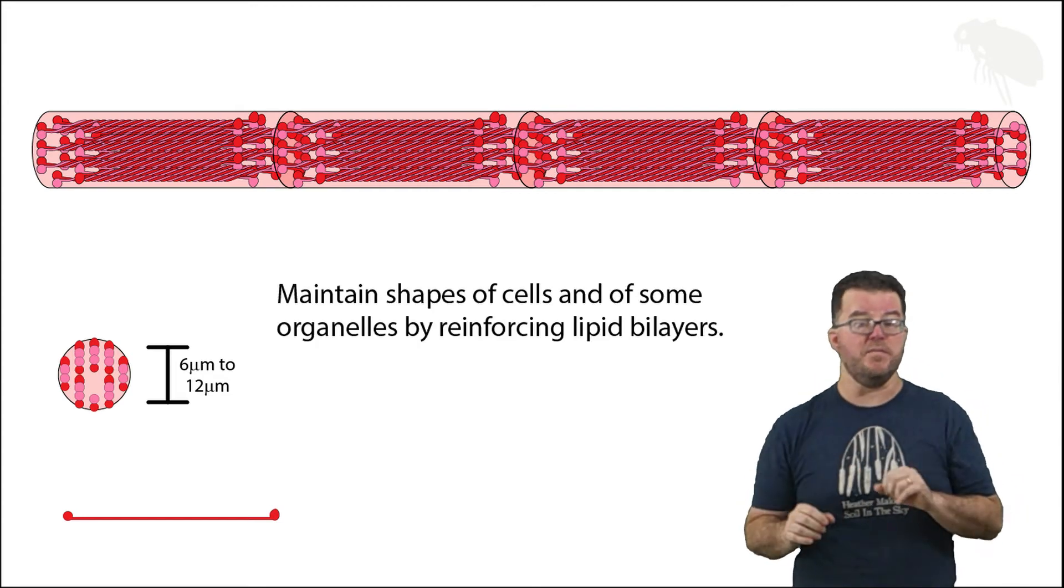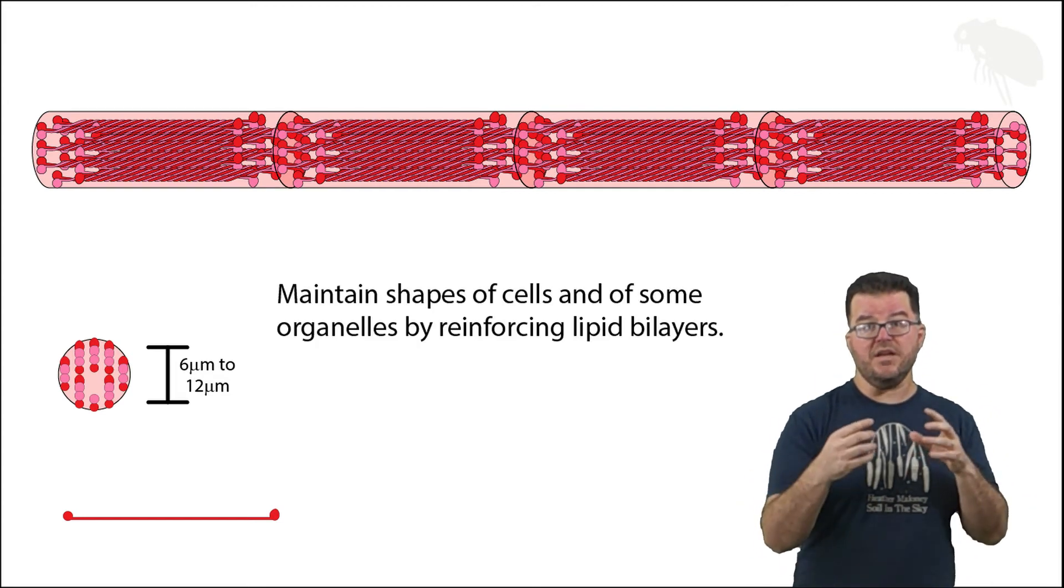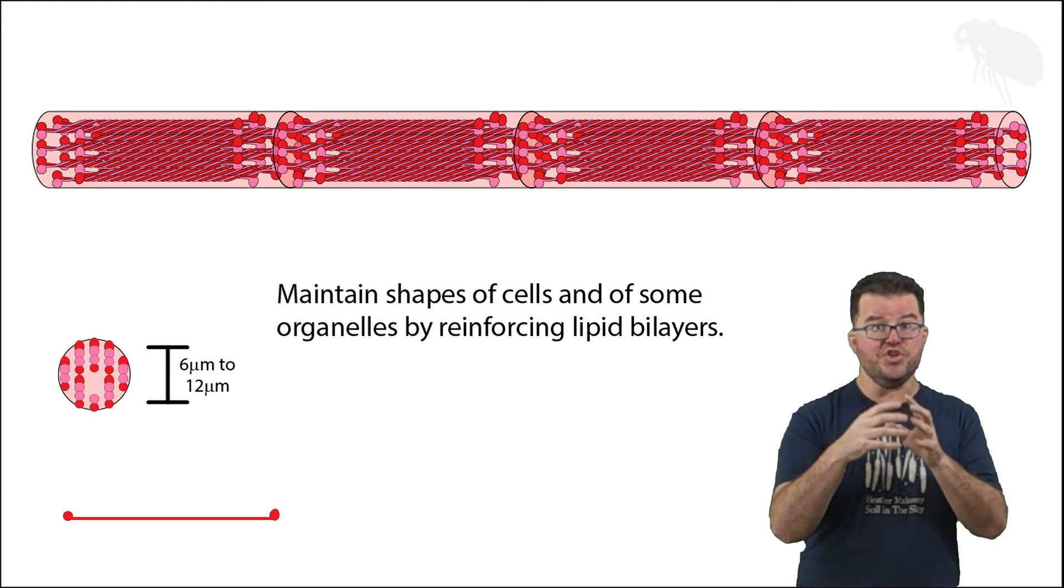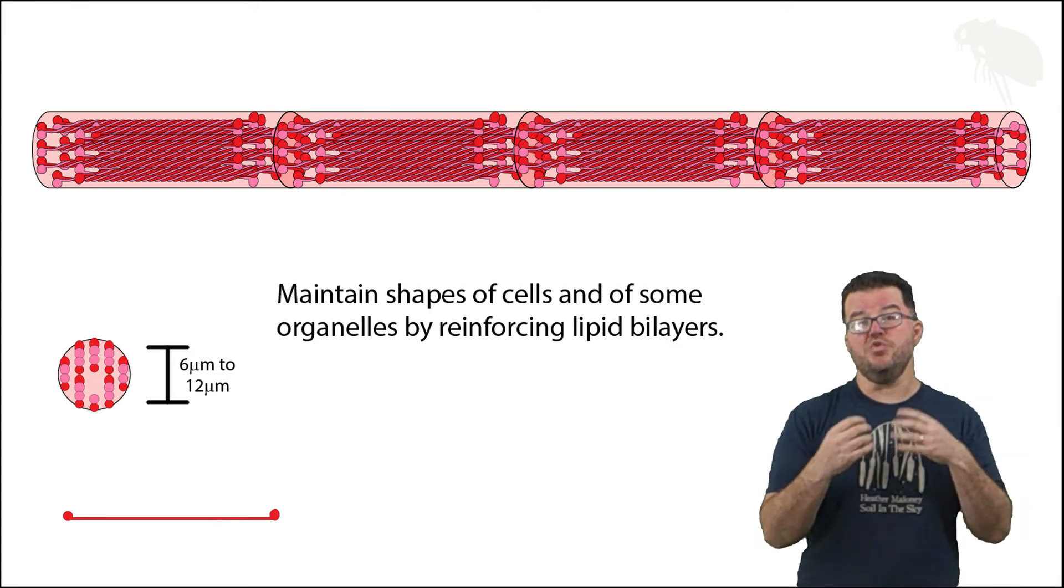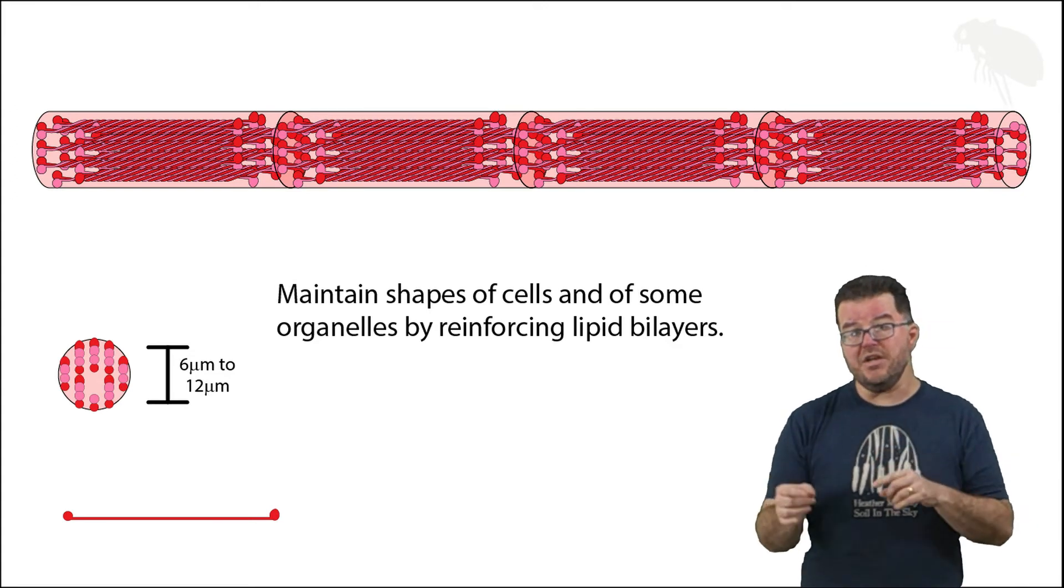So cells that have a particular shape where it's pretty rigid and they hold that shape, these are the cytoskeletal elements that will be used to achieve that end. And then in addition they serve as anchor points for integral membrane proteins.